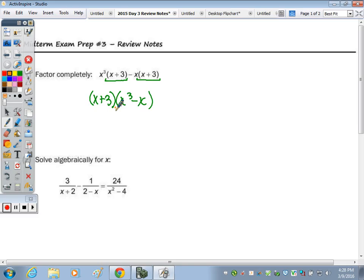I need to look at this second factor to check to see if I can factor it again, and I can. Again, x cubed and x have a common factor of x, so I pull out the x, and I'll have x squared minus 1 as the quotient.